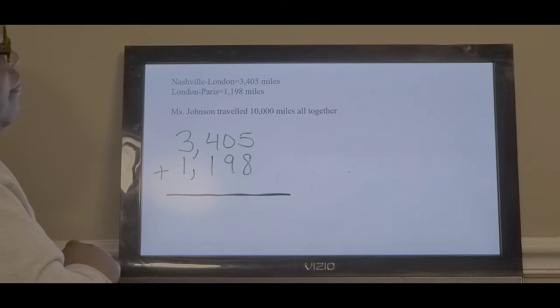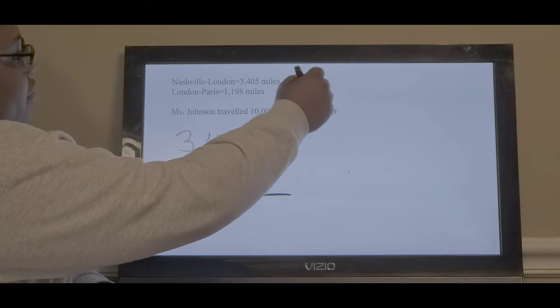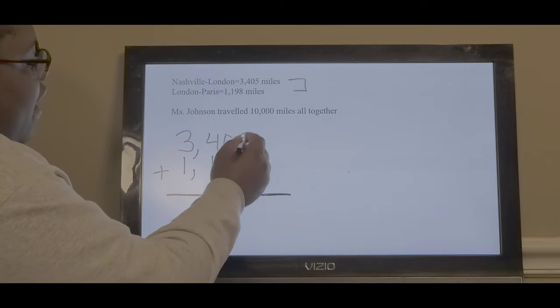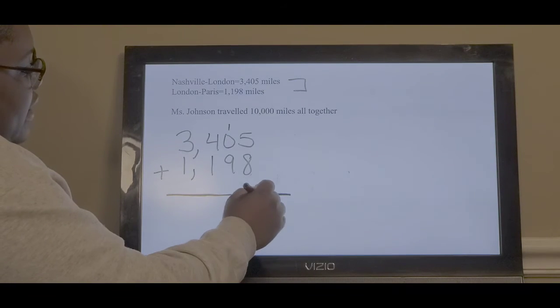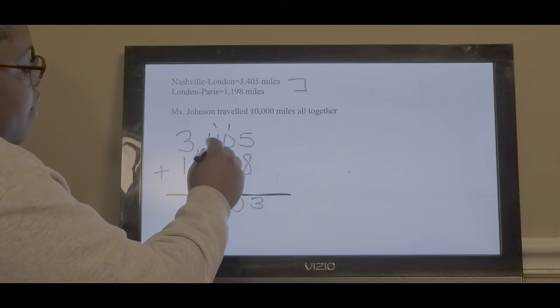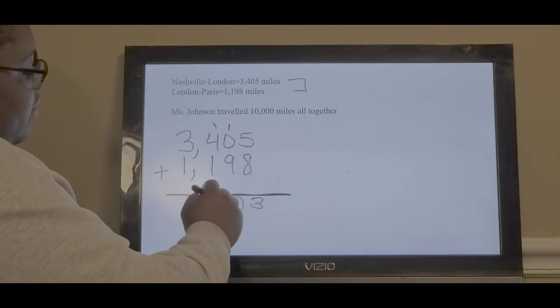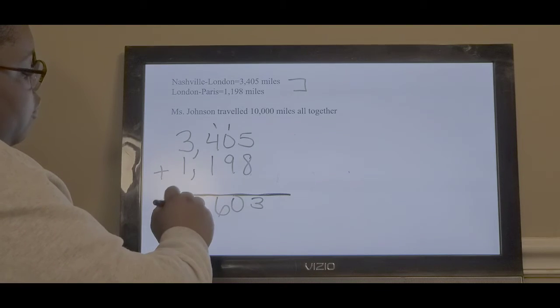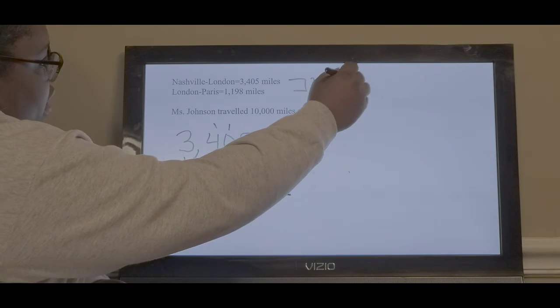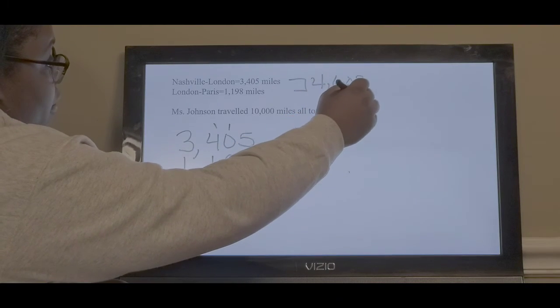We're going to add those together to see how many total miles that we know she traveled. 5 plus 8 is 13. 9 plus 1 is 10. 4 plus 1 and 1 is 6. And 3 plus 1 is 4. She traveled a total of 4,603 miles that we know about.